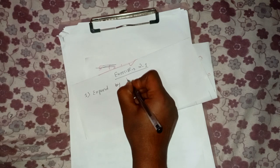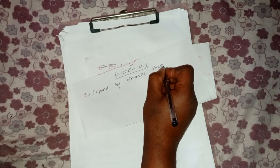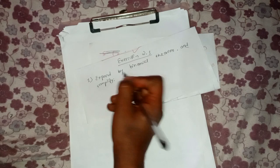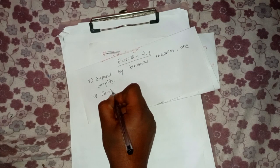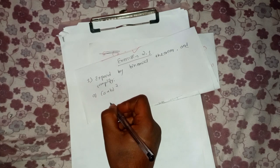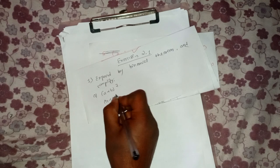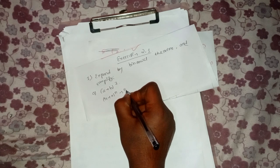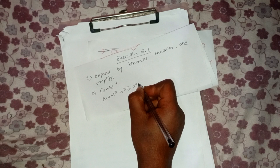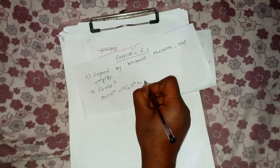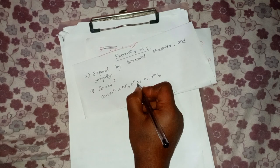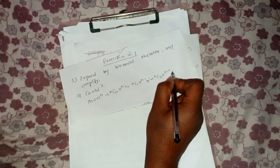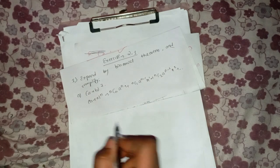We will expand using the binomial theorem. The formula is: (a + x)^n = nC0·a^n + nC1·a^(n-1)·x^1 + nC2·a^(n-2)·x^2 + ... We have already learned this formula.